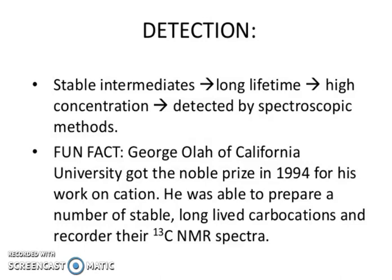Detection of stable intermediates: these have a long lifetime and high concentration, and can be detected by spectroscopic methods. George Olah of the University of California received the Nobel Prize in 1994 for his work on carbocations. He was able to prepare a number of stable, long-lived carbocations and recorded their carbon-13 NMR spectra.